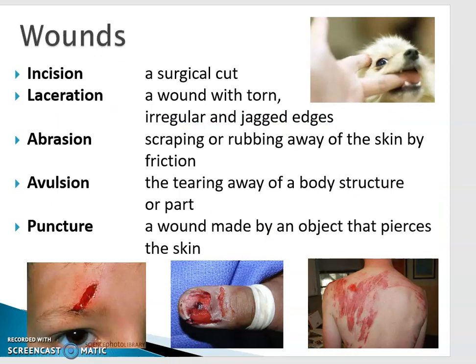We have different types of wounds you'll need to be familiar with. An incision is a surgical cut. A laceration is a wound with torn, irregular, and jagged edges. An abrasion is scraping or rubbing away of the skin by friction — hello, skateboarders. An avulsion is a tearing away of a body structure or part, such as a fingernail being torn off. Punctures are wounds made by an object that pierces the skin, like a dog bite or an IM injection. If you come in with a puncture wound, the first thing we'll ask is when you had your last tetanus shot.